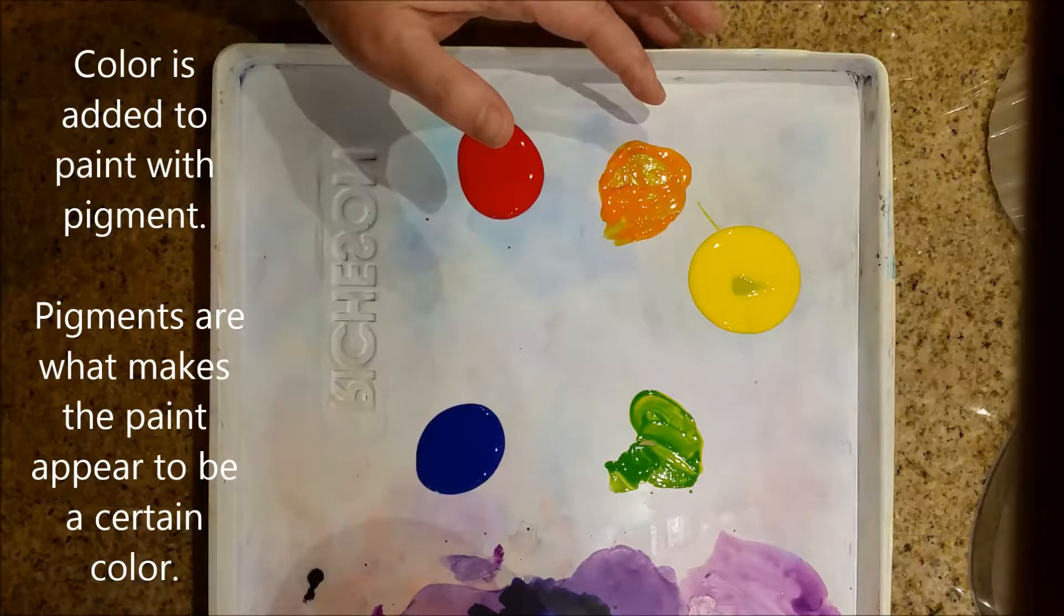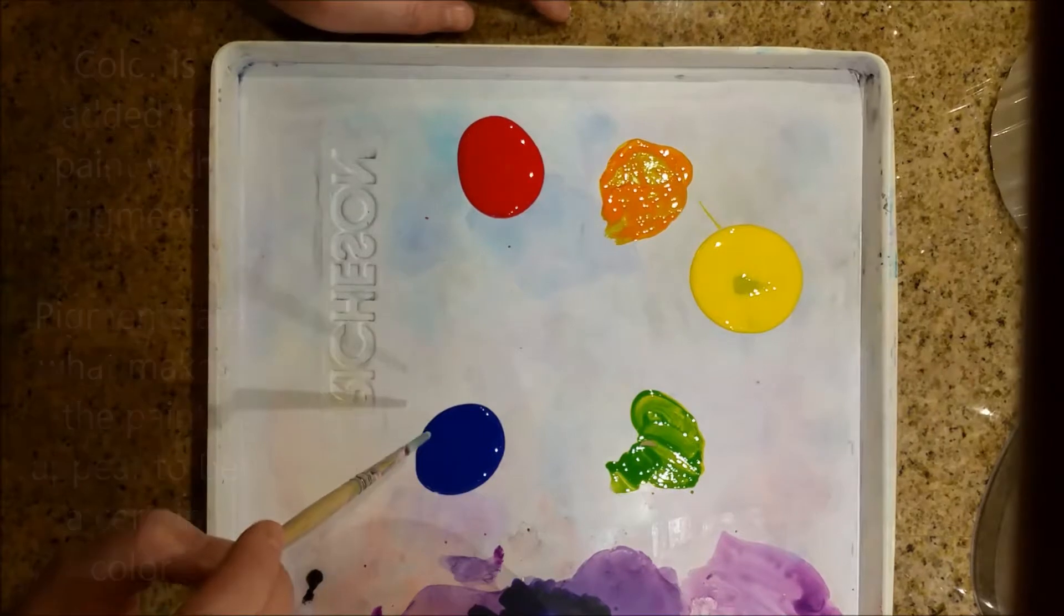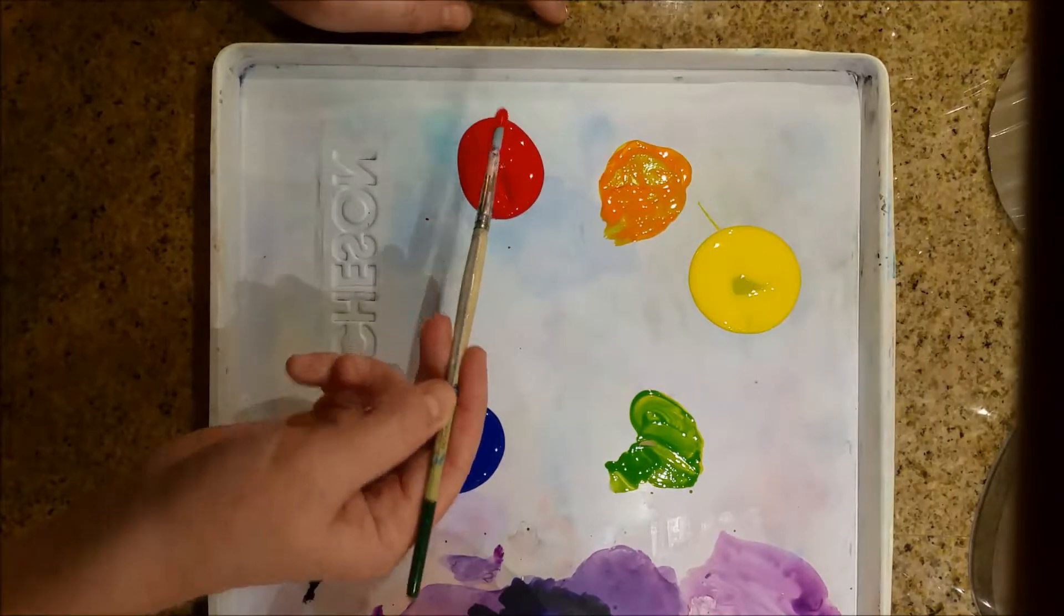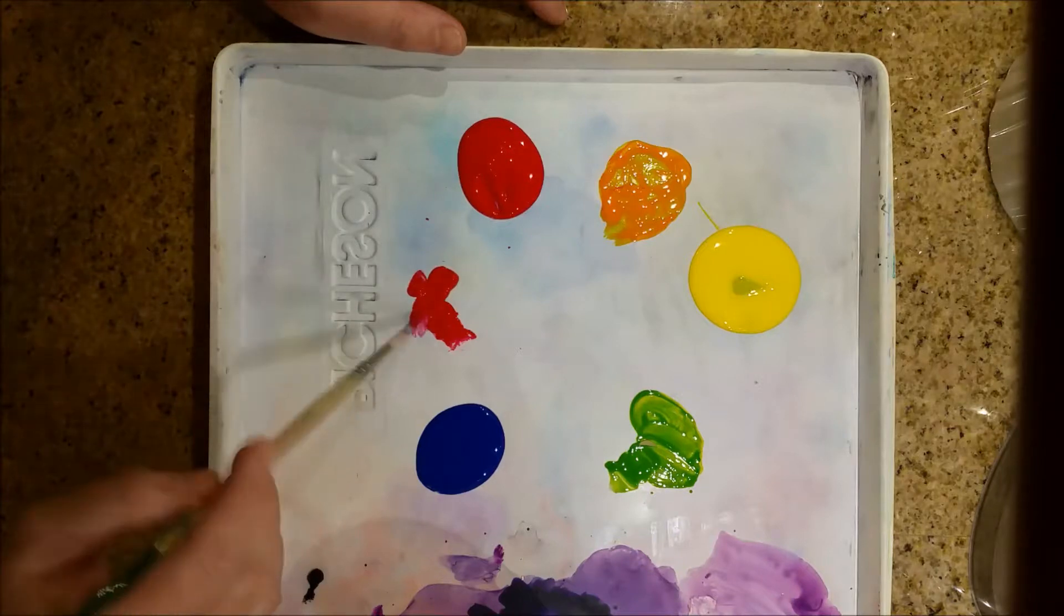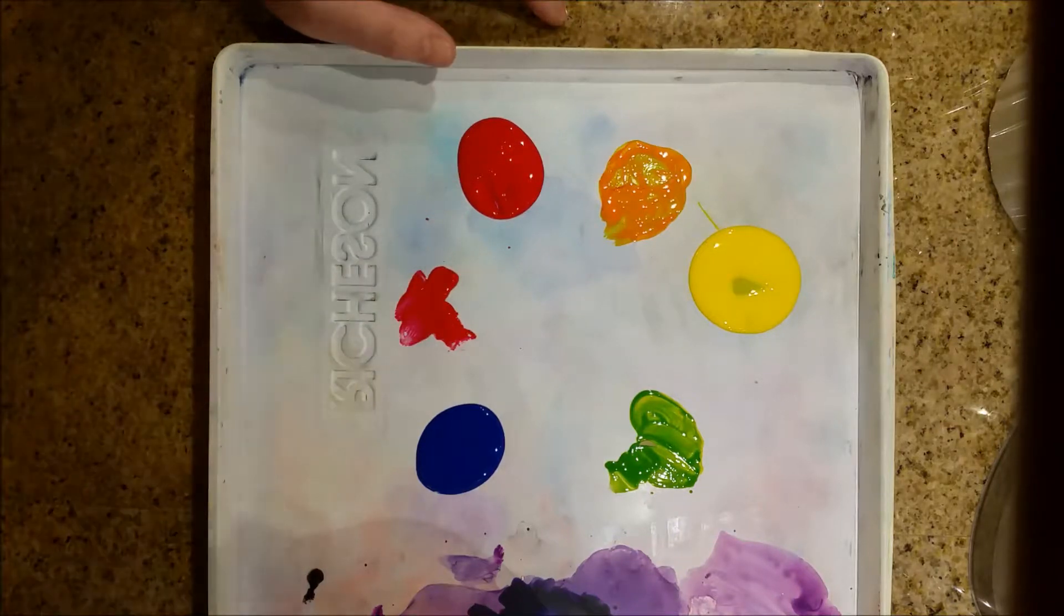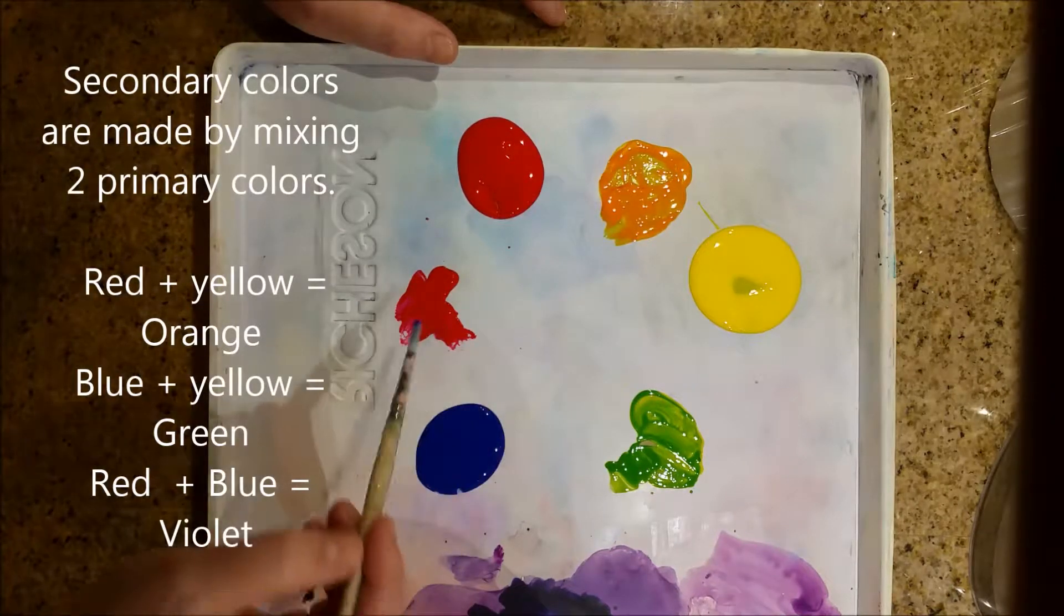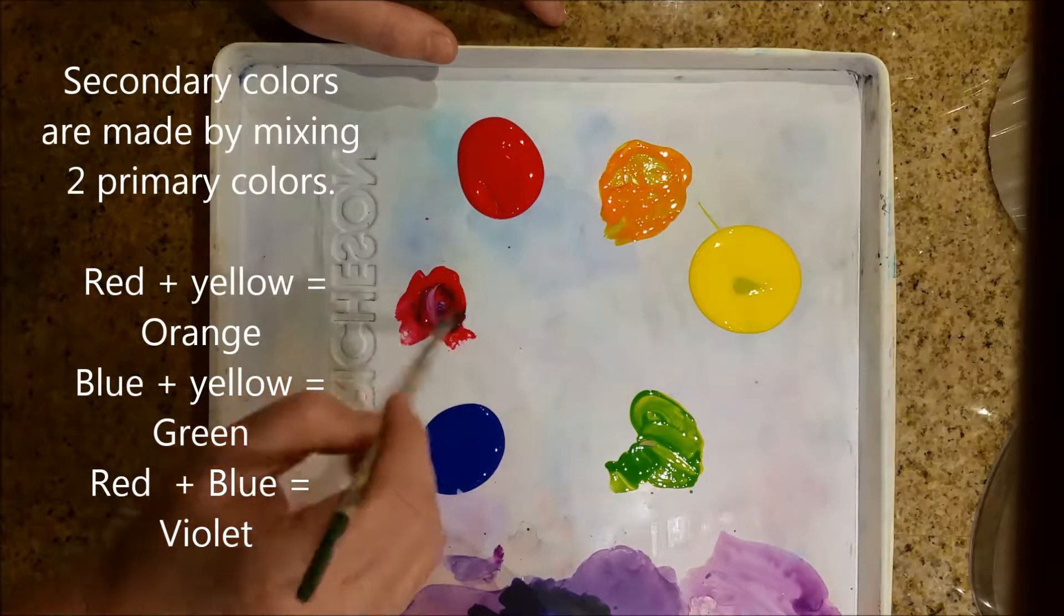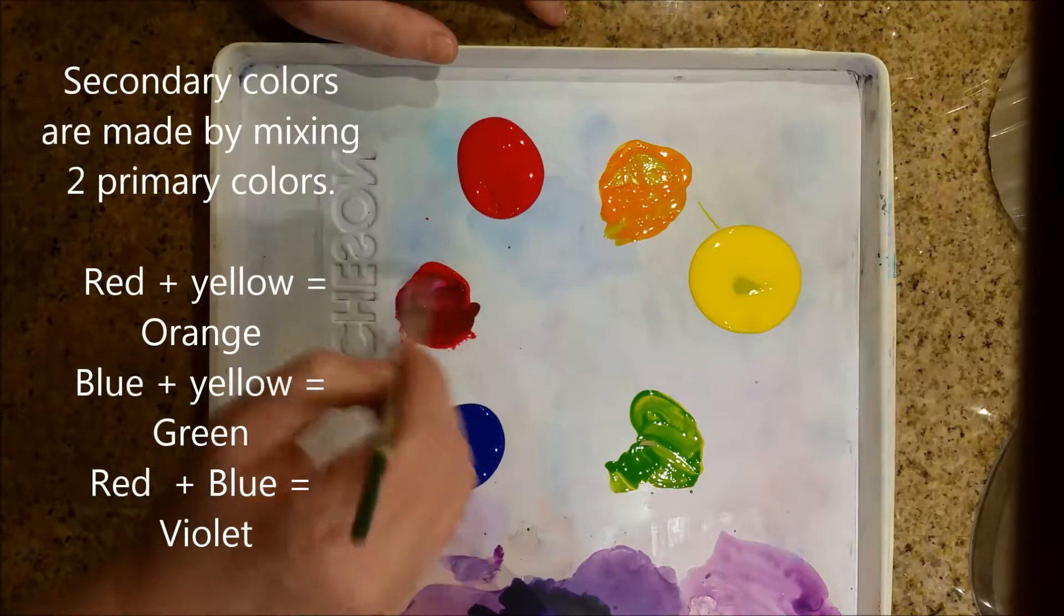All right, let's try and make our last secondary color. It's going to be violet between these two. Red is lighter than blue, so we're going to put some red over here away from the original red. And we're going to take a dot of blue. It does not take very much to turn that into violet.